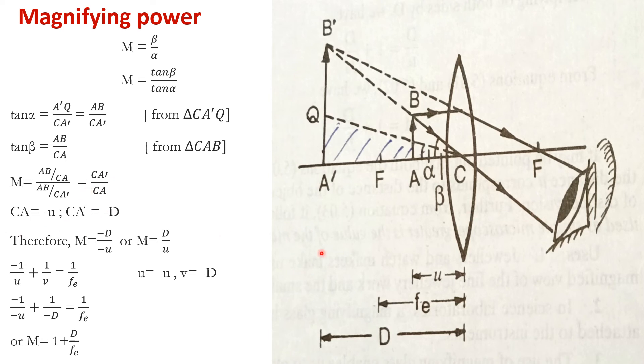From the sign convention, when we apply sign convention, the distance CA is the object distance and will be taken as minus U. Why minus U? Because it is against the direction of incident light. Light is traveling from A to C and the distance is measured from C to A, so the distance CA will be equal to minus U. Similarly CA', this distance is also against the incident light, so according to sign convention it will be treated as negative minus D. Substituting these two values we get M equals to D by U.